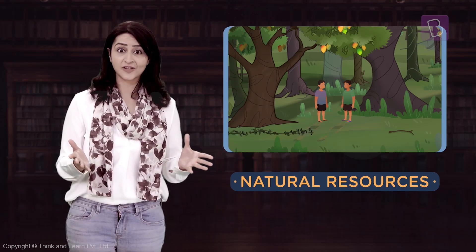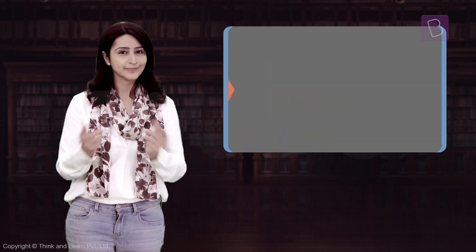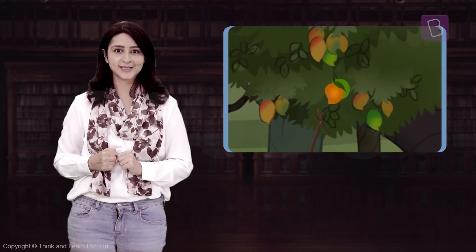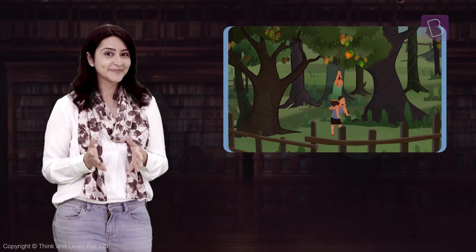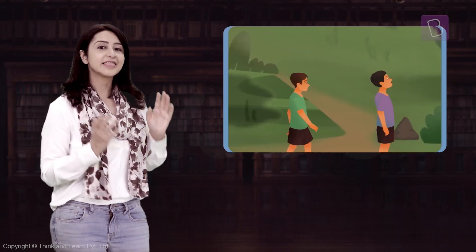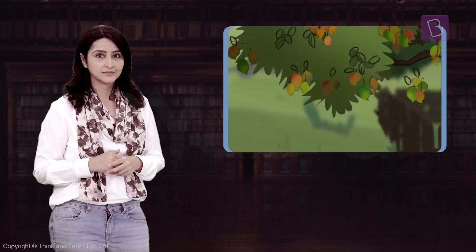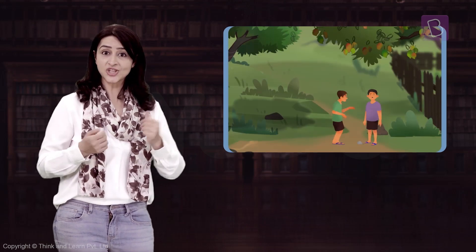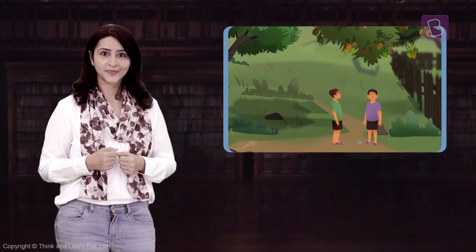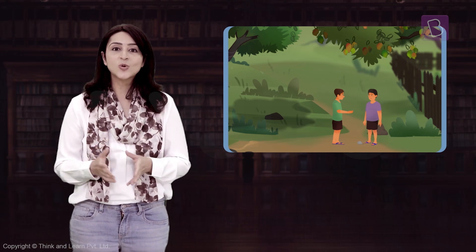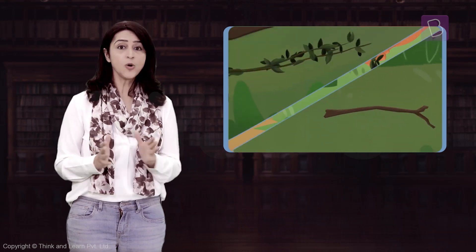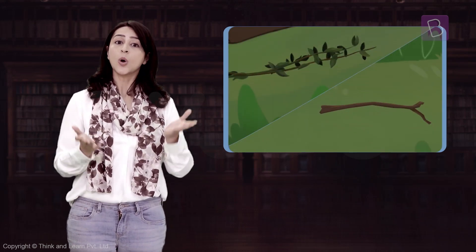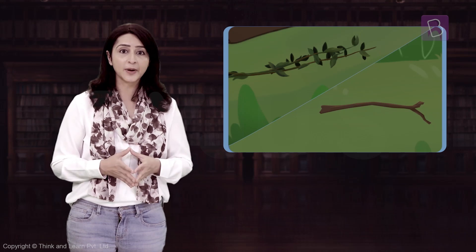But are natural resources enough for us to survive? Think about the boys you saw — they wanted mangoes but couldn't reach them, so they used a wooden stick and a creeper.